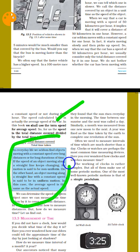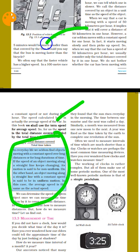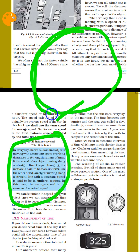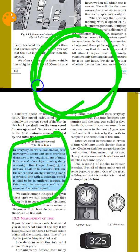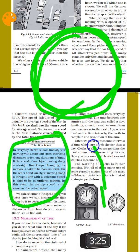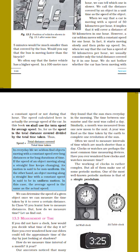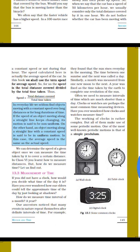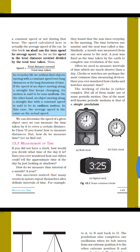Here is uniform motion and non-uniform motion. Uniform motion means the speed stays the same. Any speed that is not uniform is non-uniform motion.